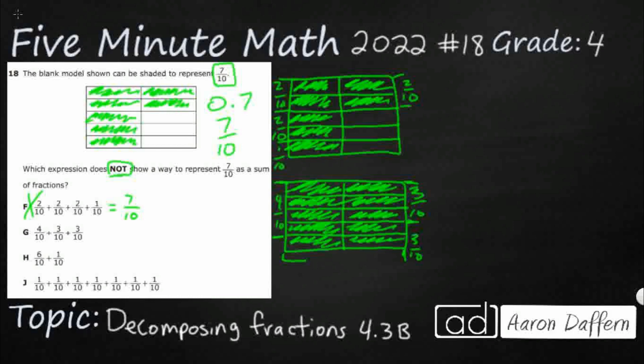So look what I've got. All the denominators are the same, so they're all tenths. Four plus three plus three makes ten. Ten-tenths equals one whole. So that's not going to work.